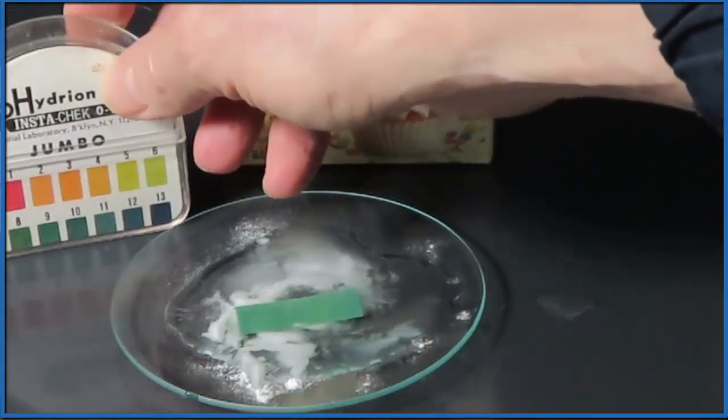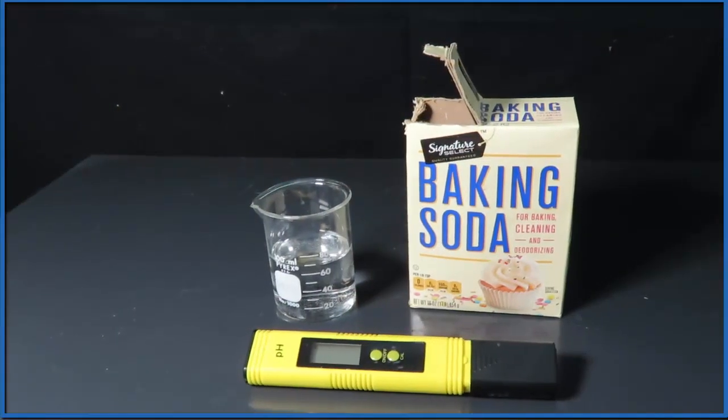If we look at the key, you can see right there, looks like 8, right around 8 would be the pH for the baking soda mixed with water.